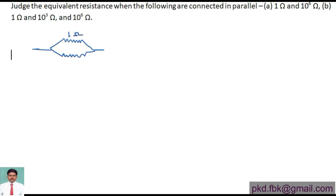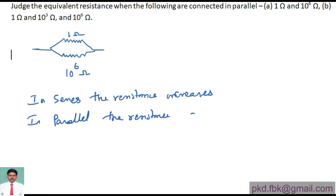So 1Ω with 10^6Ω - in parallel combination, the equivalent resistance is always less than the least one. Suppose if you take the 1Ω resistance and the 10^6Ω resistance in parallel, what happens? In series, the resistance increases; in parallel, the resistance decreases.